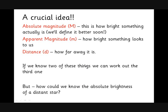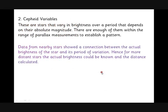But you might be thinking, how can we know two of those three things? If it's a distant star we can't know how bright it really is. We can't know how far away it is - that's what we're trying to work out. We can know how bright it looks, but that's one out of three and one out of three is no good.